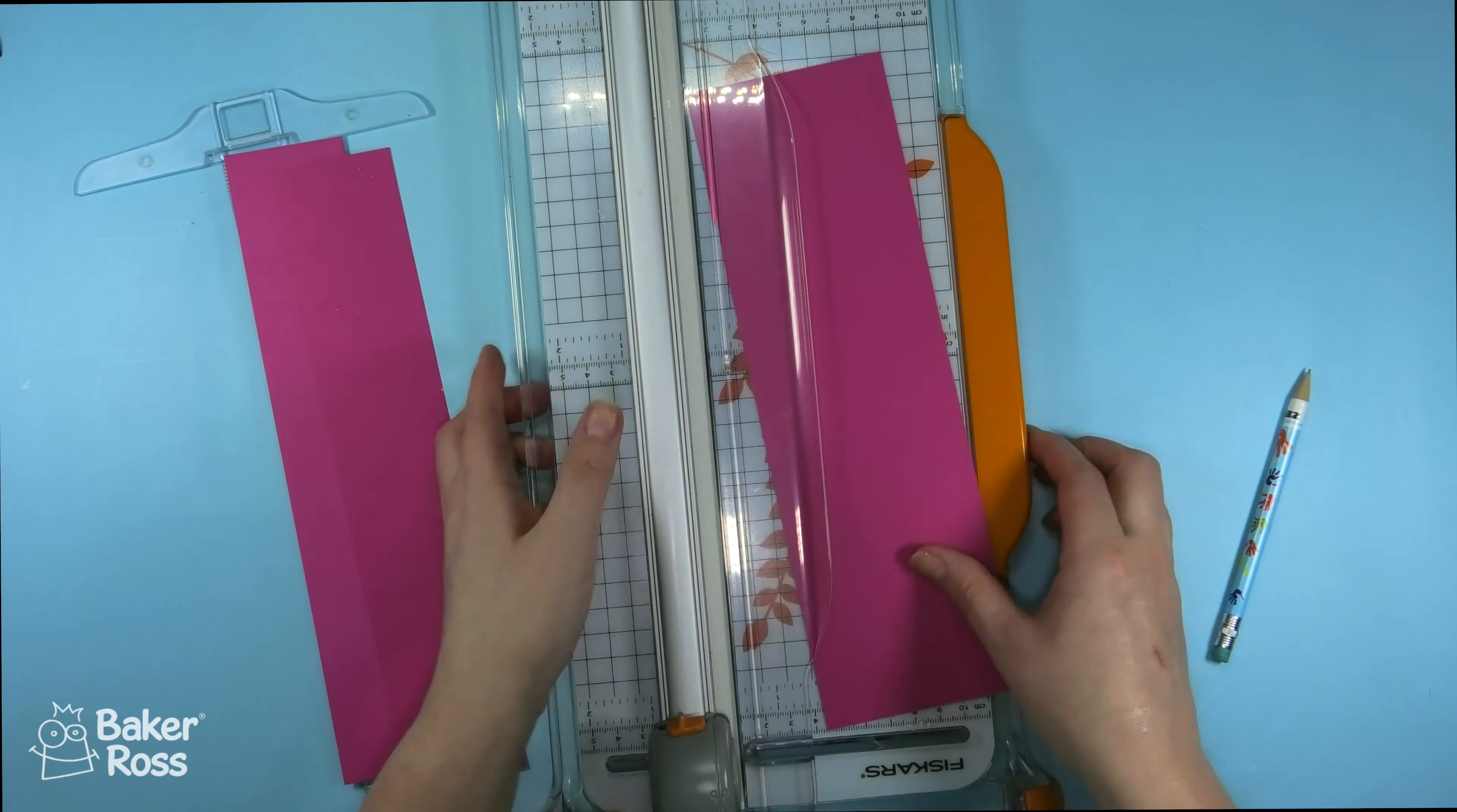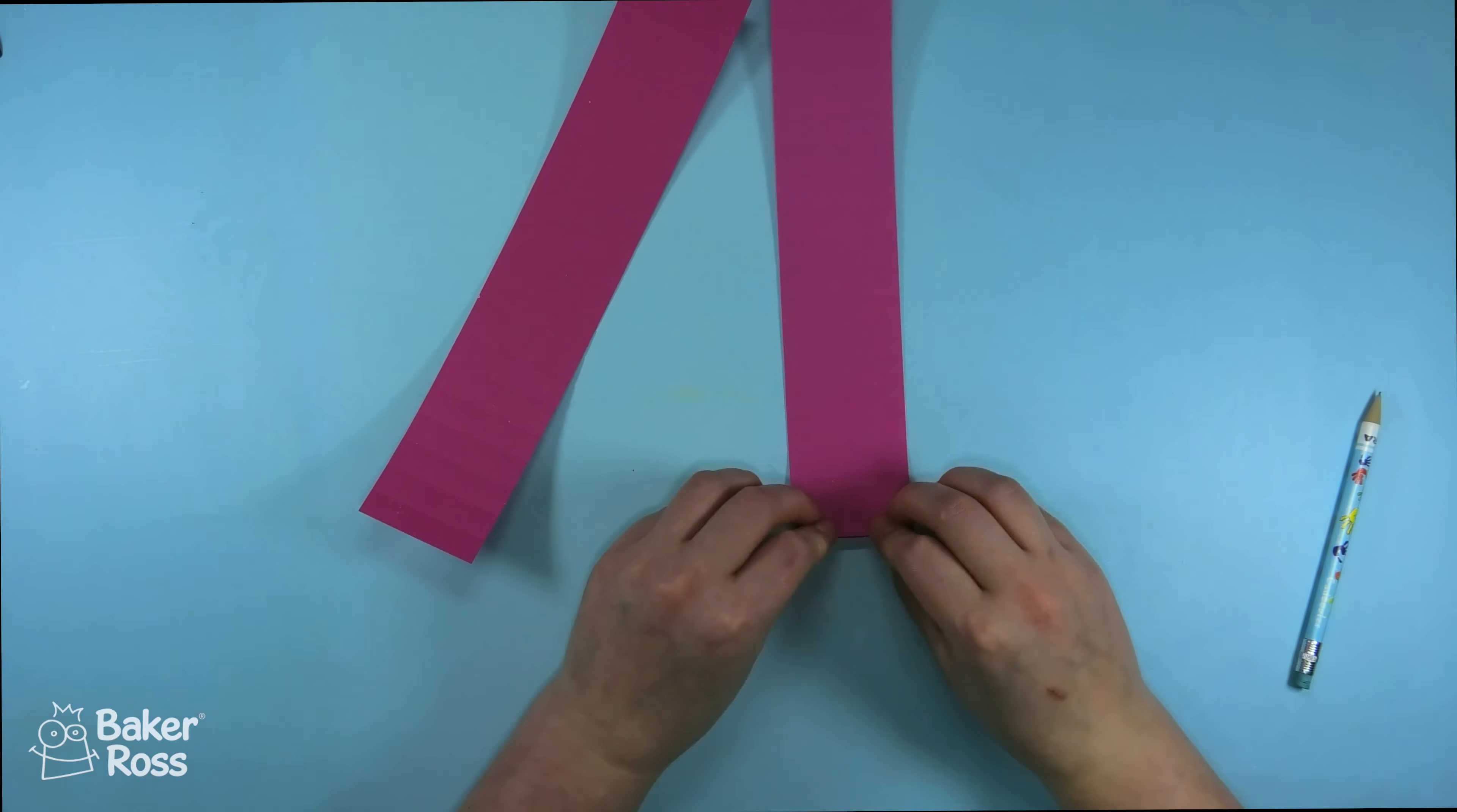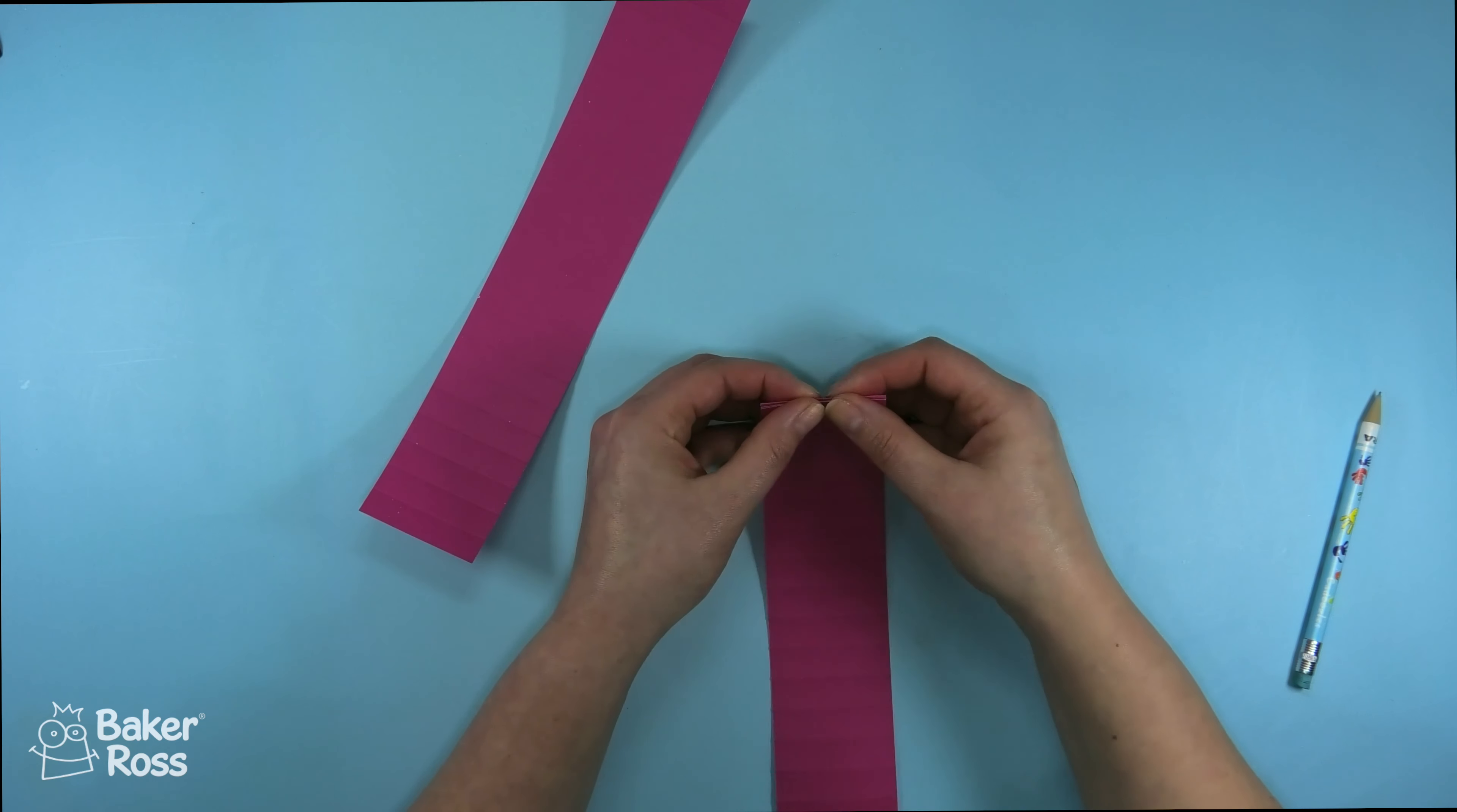This is what we're going to use to make the rosette shape. I think a rosette is a great idea for a Mother's Day card because every mom deserves an award. So here I'm folding this strip of paper backwards and forwards in a concertina design.